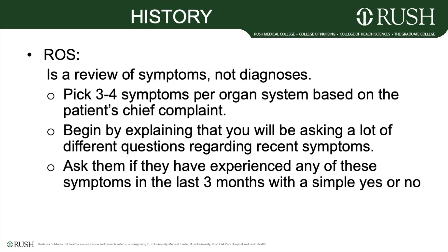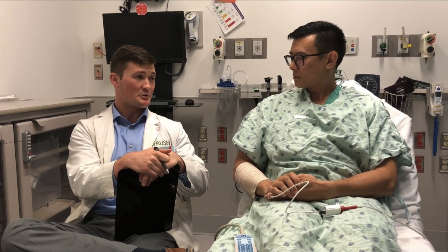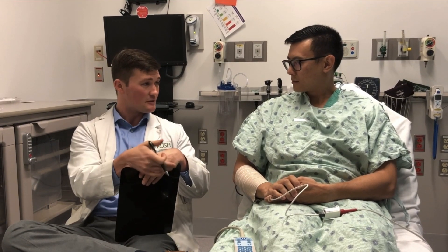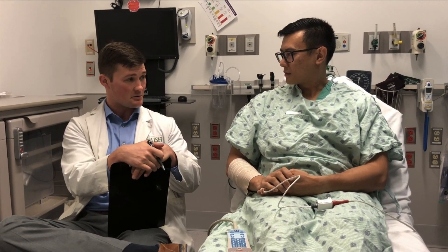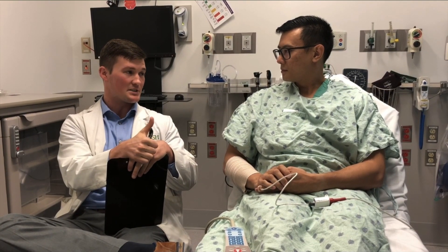When asking the review of systems, remember this is a review of the patient's recent symptoms, not diagnoses. Do not ask every single symptom for each organ system — pick three or four symptoms per organ system based on the patient's chief complaint. It's okay to ask more symptoms in the organ system related to the chief complaint. Begin by explaining you'll be asking many different questions regarding recent symptoms and ask them to respond with a simple yes or no. In the demo, Derek says: 'I'm going to ask you a lot of questions quickly — the review of systems. Respond yes or no to whether you've had any of these symptoms in the past three months. Have you had any cough, wheezing, or shortness of breath?'